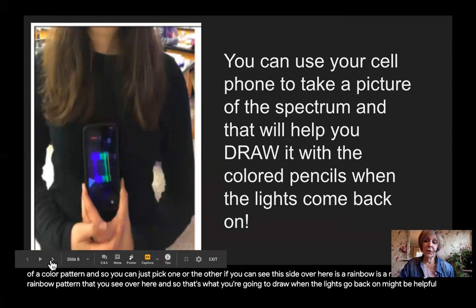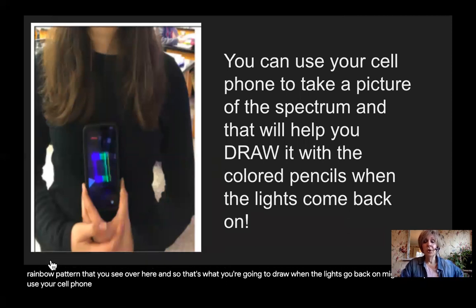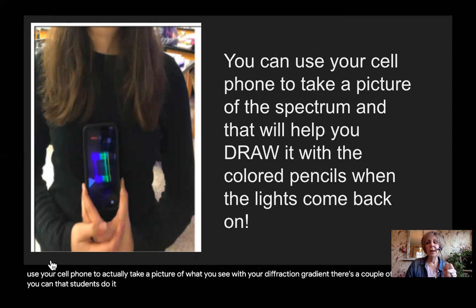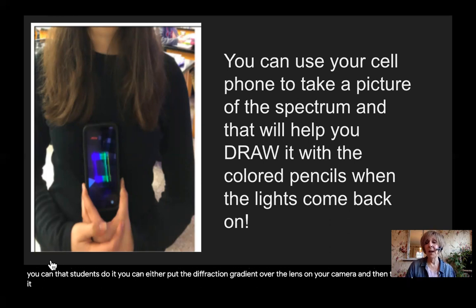It might be helpful to use your cell phone to actually take a picture of what you see with your diffraction gradient. There's a couple of different ways that students do it. You can either put the diffraction gradient over the lens on your camera and then take a picture of it that way or sometimes there's lots of different ways you can do it. But you may have to kind of play with it a little bit so that you could take a picture of it.